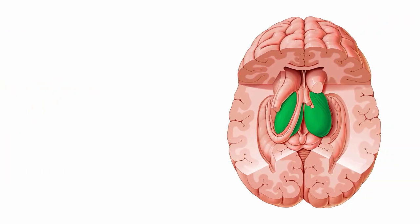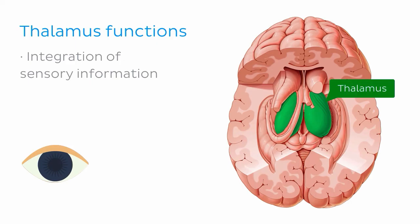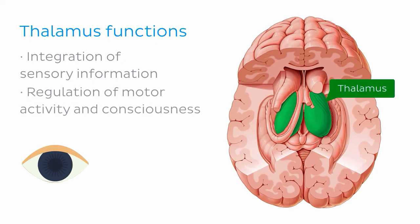From a functional point of view, the thalamus is of utmost importance for the integration of sensory information in the central nervous system, and for the regulation of motor activity and consciousness.